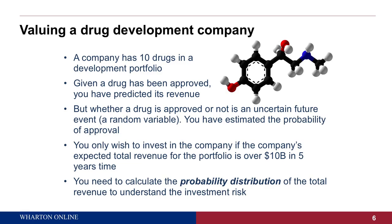Let's say we only want to invest in the company if the expected total revenue from this portfolio of 10 drugs is greater than $10 billion in five years — that might be our investment criteria. We don't know for sure whether these drugs will get past the regulatory hurdle. But if we have a probability estimate for approval and an estimate of the revenue each drug could generate, then we have the building blocks to create a probability distribution for the total revenue. If we can create that probability distribution, we can use it in our decision-making — for example, by working out the probability that the portfolio generates more than $10 billion in revenue in five years' time.